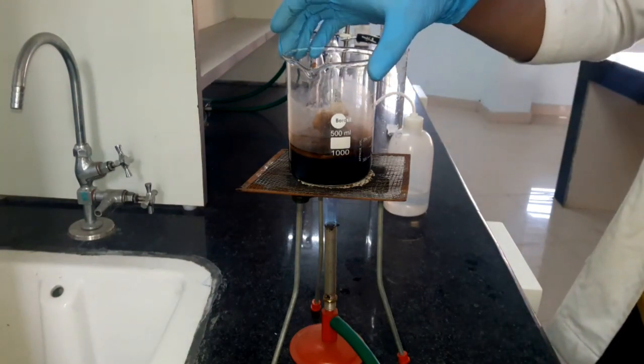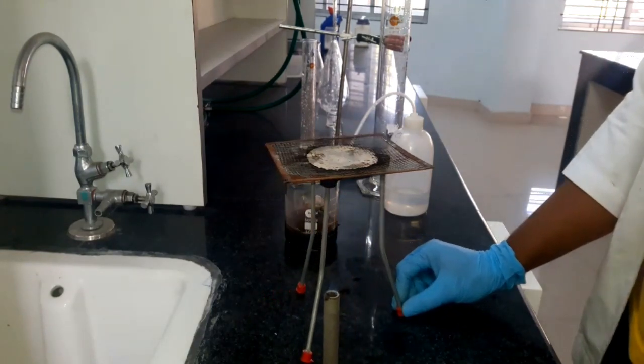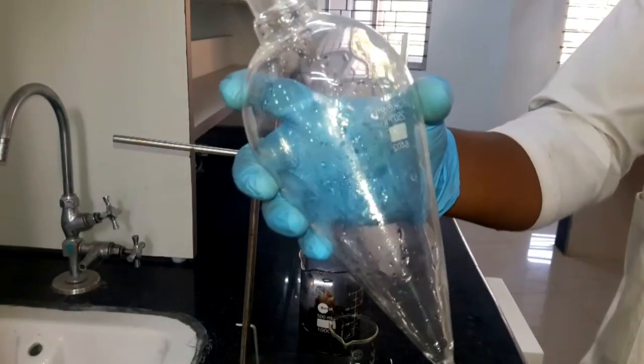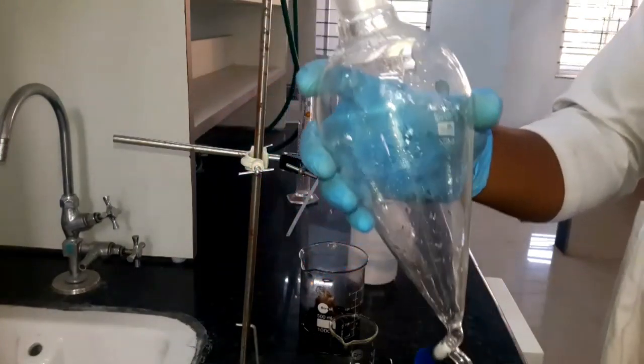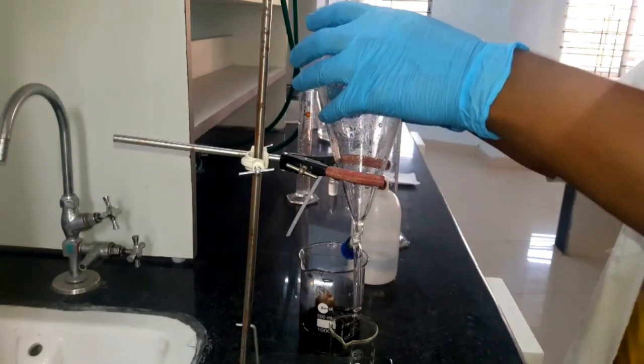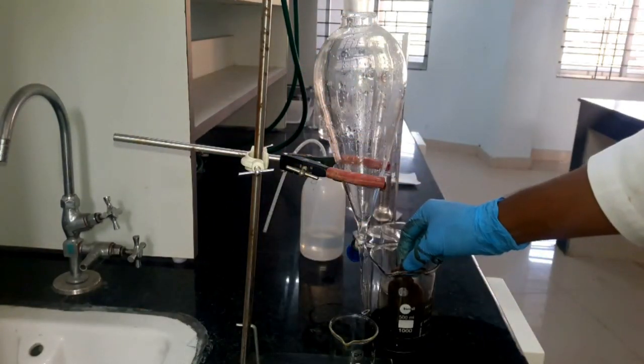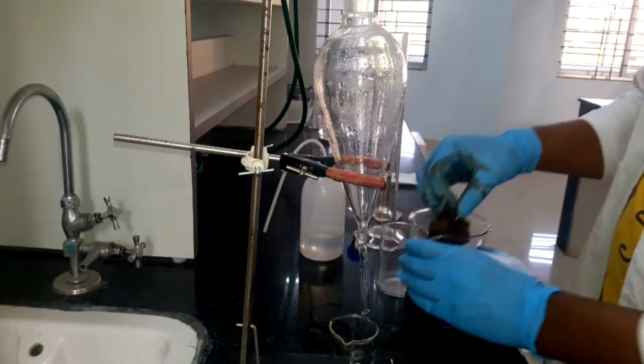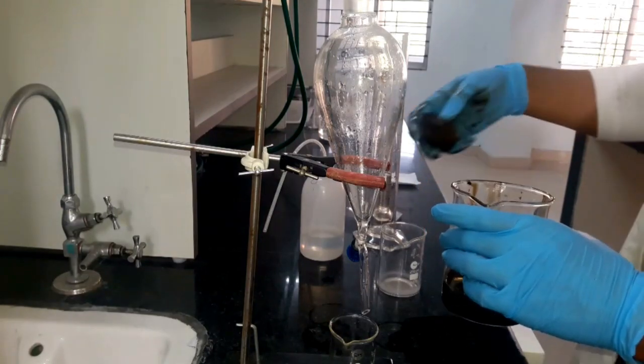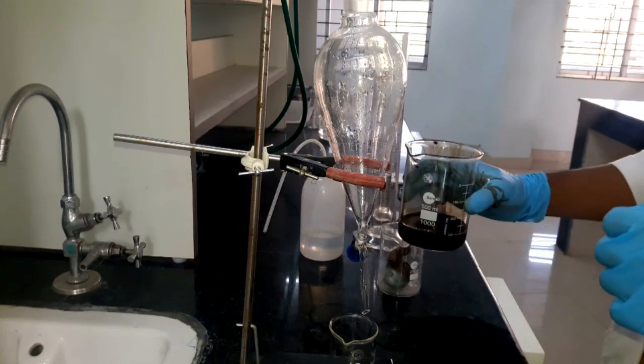Now we keep the solution for cooling. This is our 250 ml separating funnel - with the help of this apparatus we can separate the organic and aqueous layers. This is our cold solution, now the cold solution is mixed with 15 ml DCM.